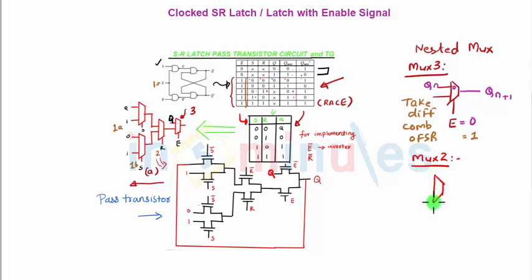So mux 2 is going to have one of the two inputs from S and R as my select. Here I am considering R, so R is my select line. Now R can be 0 and R can be 1. When R is 0, that means this output will go. Let's see what that output is.